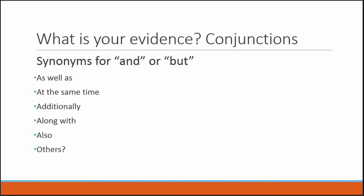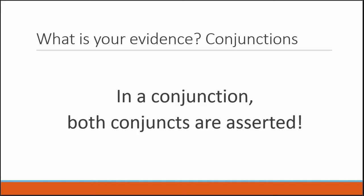As with if-then, there are many synonyms for 'and' or 'but' — as well as, at the same time, additionally, along with, also. Synonyms for 'but' would be things like 'though' or 'however.' In a conjunction, both conjuncts are asserted. This is the reason why in logic 'and' and 'but' are equivalent: the statements linked by 'and' or 'but' are both asserted.